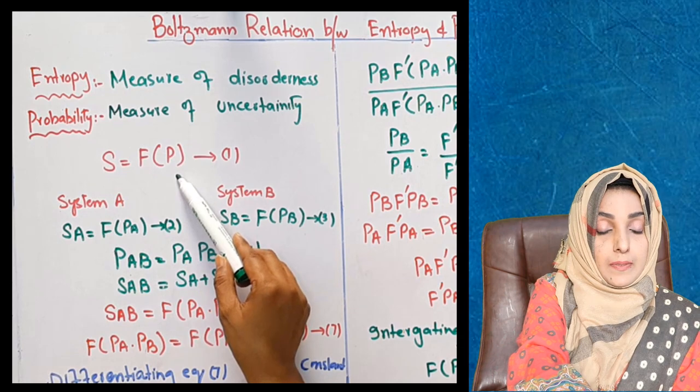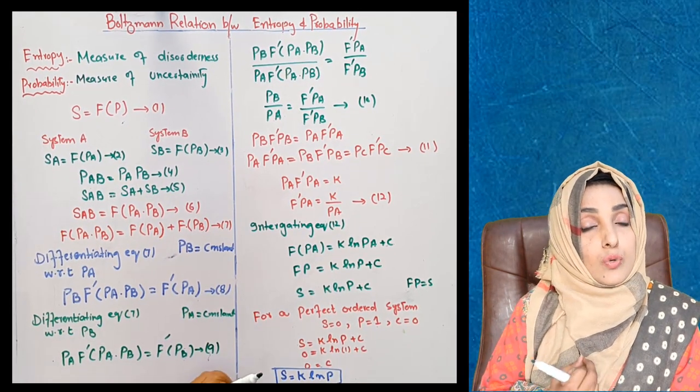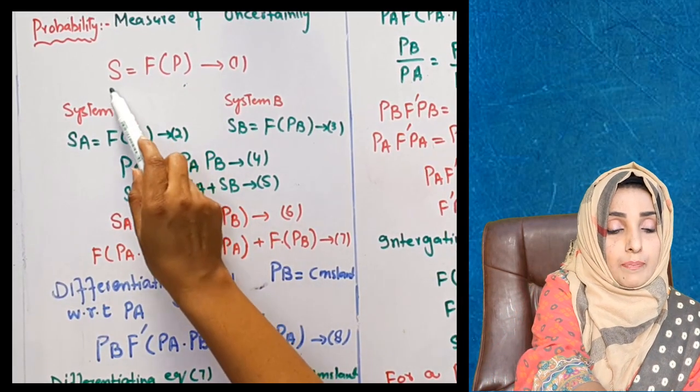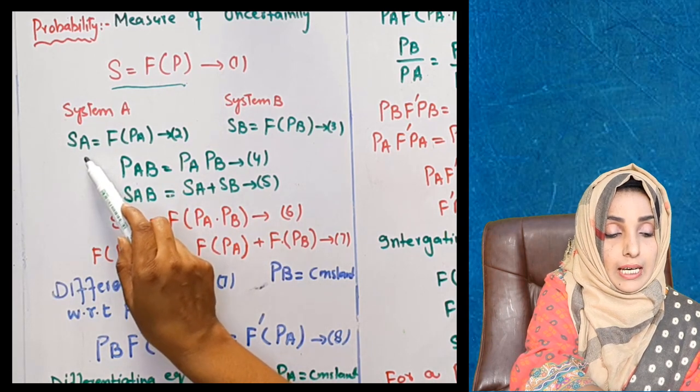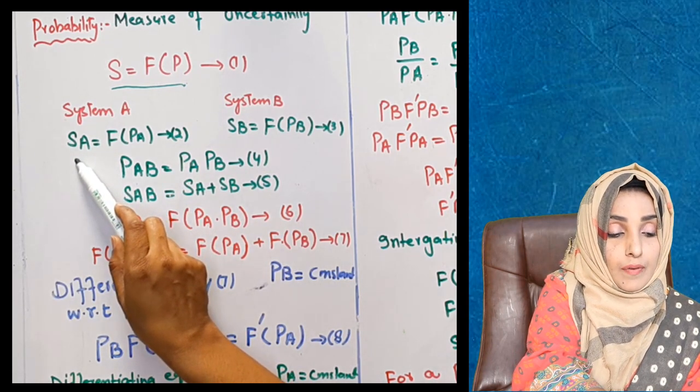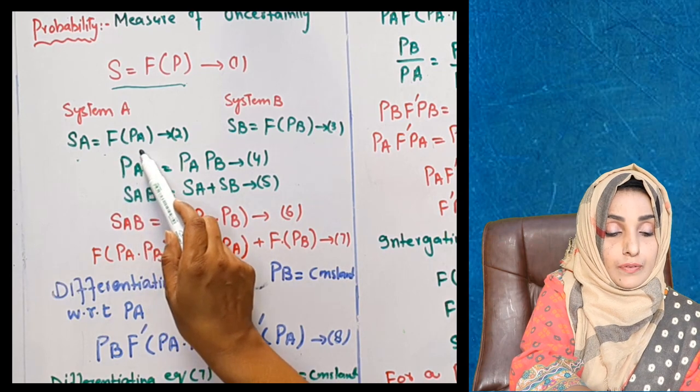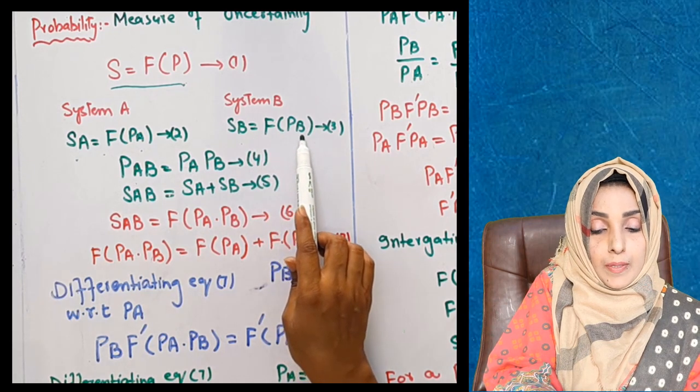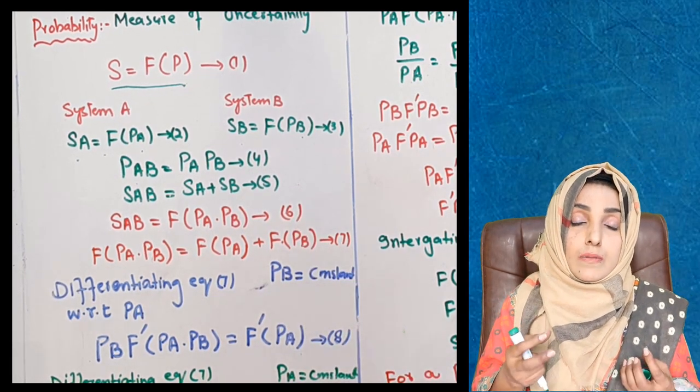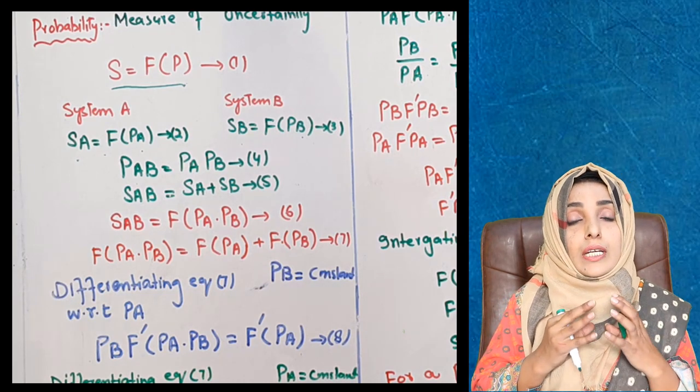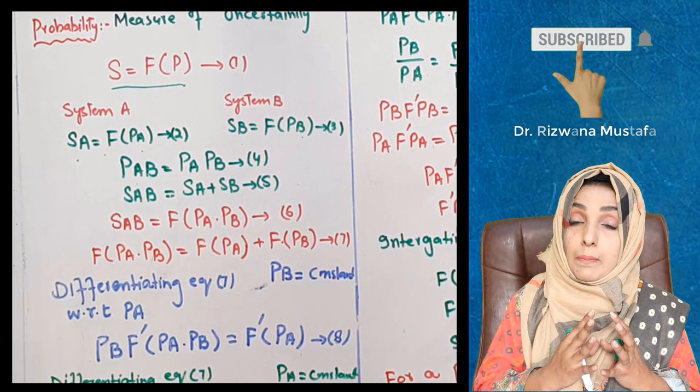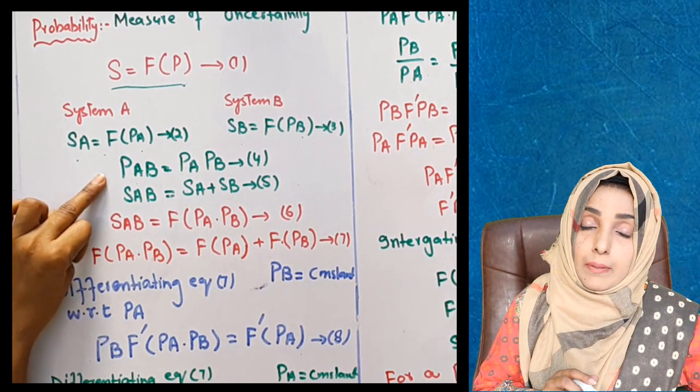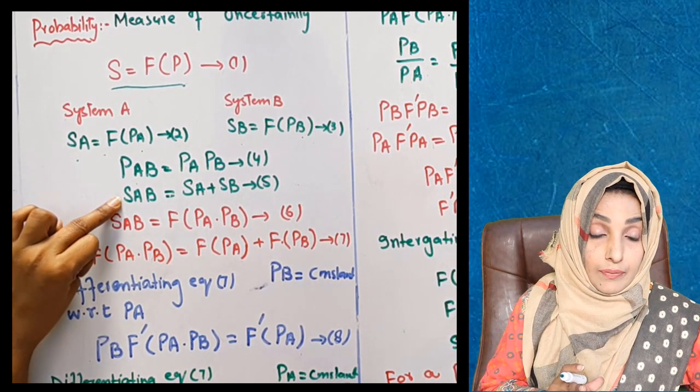In mathematical form, first we have a system A and a system B. For system A, entropy S(A) is equal to the function of probability of system A. Similarly, entropy of system B is equal to the function of probability of system B. When we mix these two systems, their probability will get multiplied and their entropy will add up, because probability is a multiplicative function and entropy is an additive function.